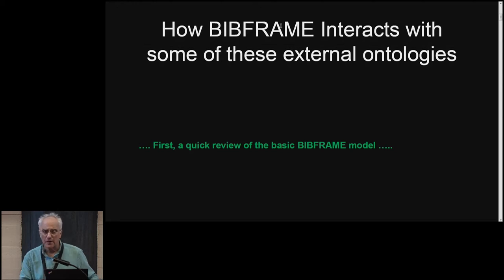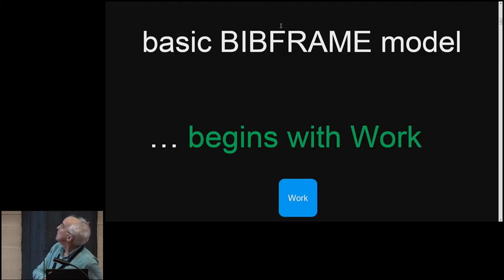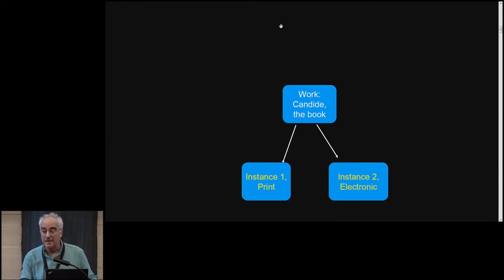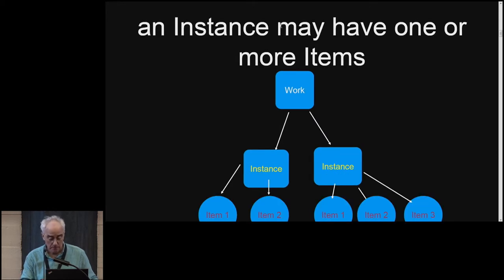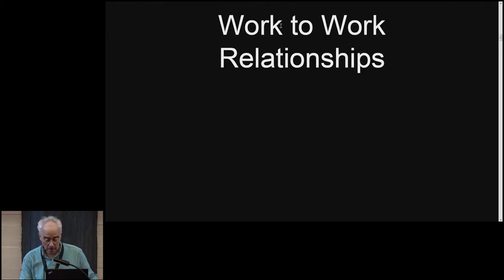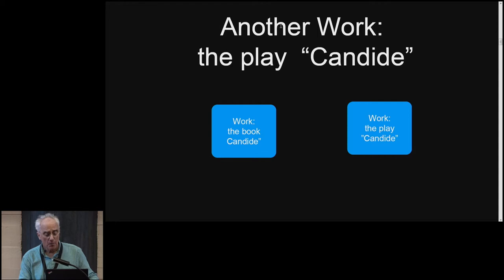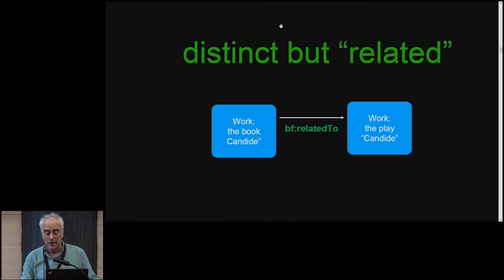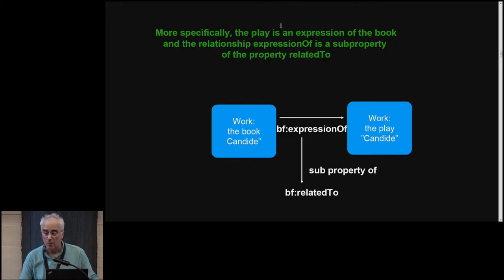I want to give a quick review of the BibFrame model to provide some context. The basic BibFrame model begins with a work, and a work can have one or more instances. For example, a work like Candide might have a print version and an electronic version — those would be two instances. Every instance can have one or more items, which are the copies of the given instance. We also define work-to-work relationships as an important aspect of BibFrame. For example, the book Candide and the play Candide are two distinct works, connected by the property BF:relatedTo, which is a super-property for a number of sub-properties of BF:relatedTo.